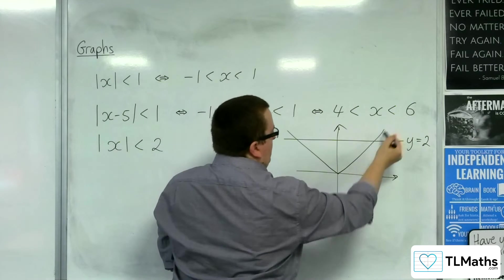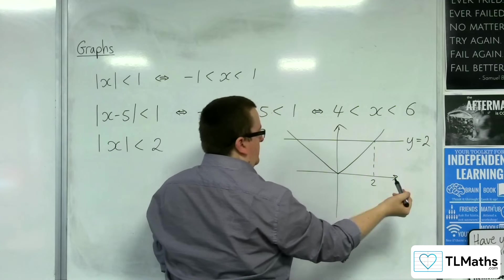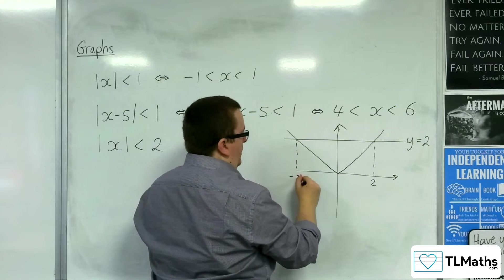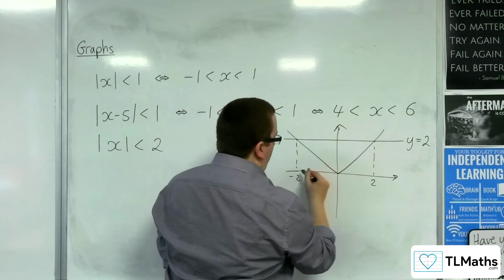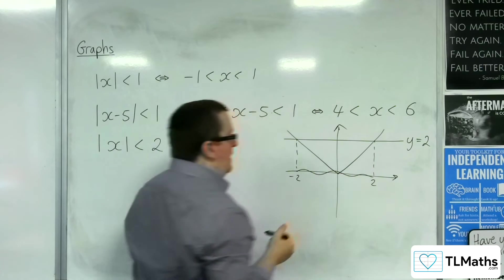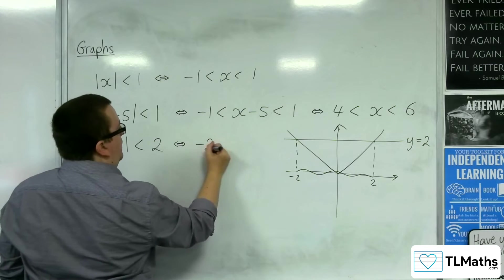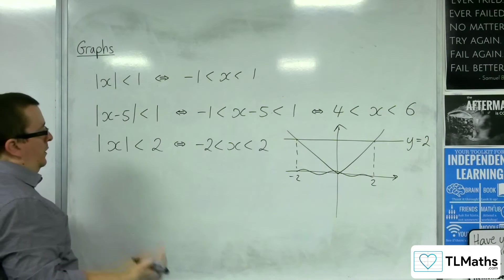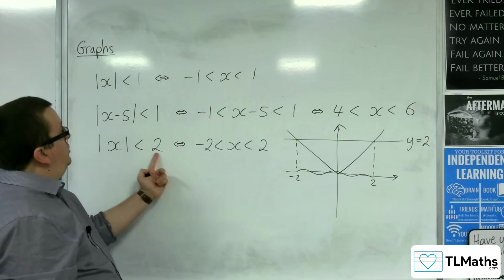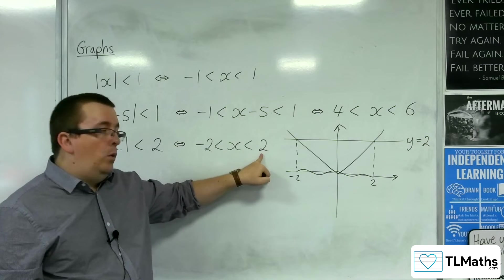So, this will be where x is equal to 2. That's that point there. And this point here will be minus 2. And so, where is the modulus graph below y equals 2? Well, it's below it there. So, this is equivalent to writing down that x is between minus 2 and 2. So, you can see that actually just changing that number on the outside will change those two endpoints on the inequality.